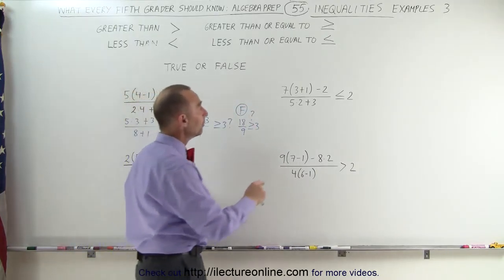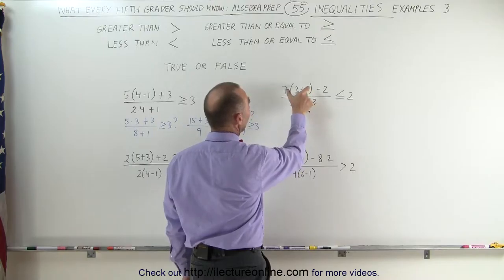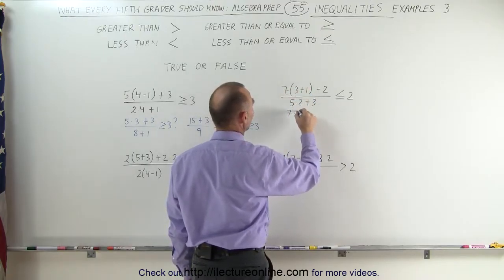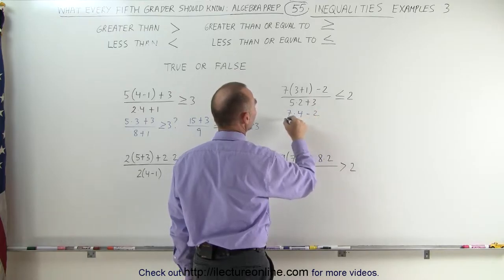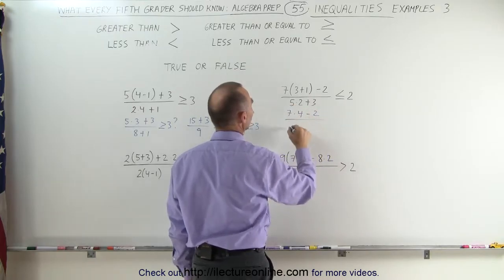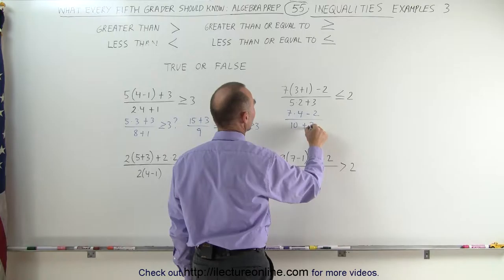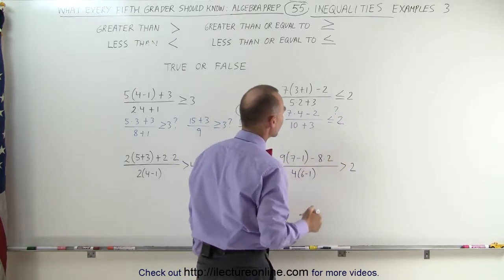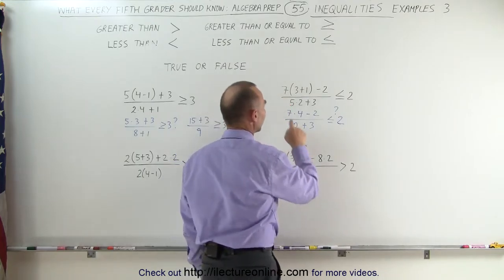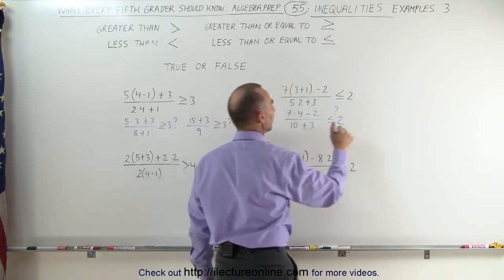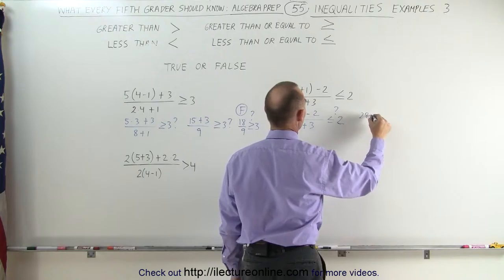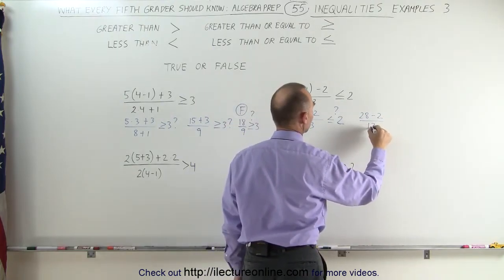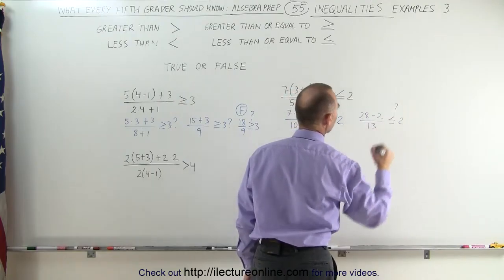Moving on to our second example. We're going to work out what's in the parentheses first. We get 7 times (3 plus 1 which is 4), minus 2, divided by (5 times 2 which is 10), plus 3. Is that less than or equal to 2? Continuing on, 7 times 4 is 28, giving us 28 minus 2 divided by 10 plus 3, which is 13. Is that less than or equal to 2?